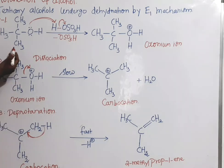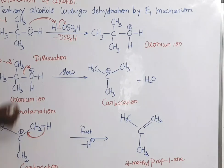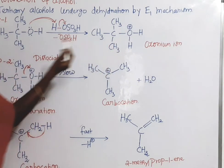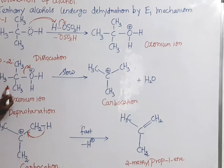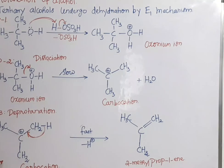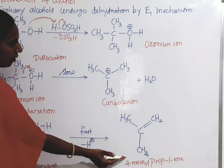This tertiary alcohol undergoes dehydration by E1 mechanism in three steps. In the first step, we have oxonium ion formation. In the second step, the oxonium dissociates and a carbocation forms. In the third step, the carbocation undergoes deprotonation - H plus is removed - and we have an alkene product.